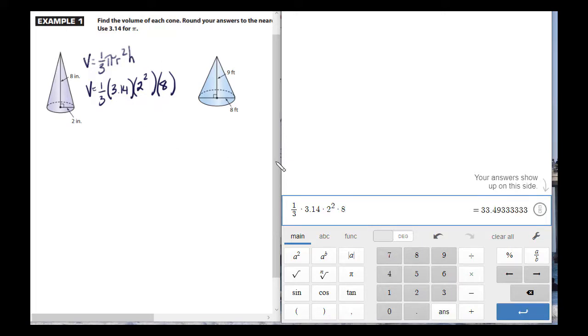There's my height, and my volume. We're going to round it off to 33 point, it's 4.9. We're going to just call it 33.5. 33.5, and it's cubic inches because it's volume.